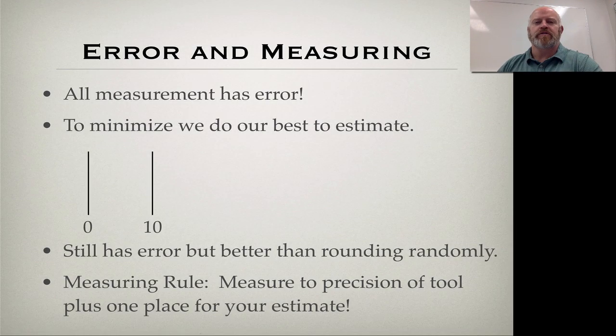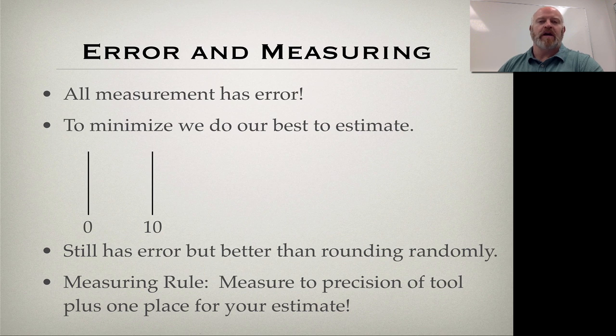Okay guys, in this video we're going to start going into this idea of error and measurement and how when we measure things we actually have to effectively account for the fact that all measurement has error. There is no measurement that is done that does not have some sort of error. You can have the best tool, the most precise tool in the universe, and at the end of that measurement there always is some sort of uncertainty.